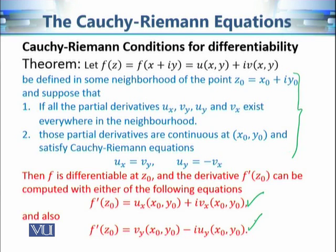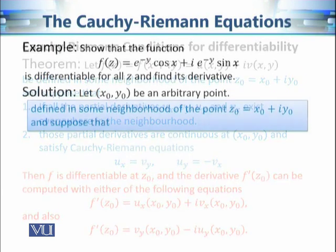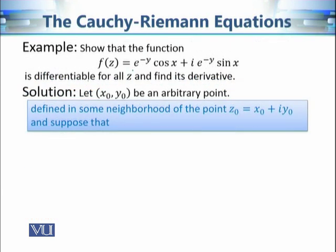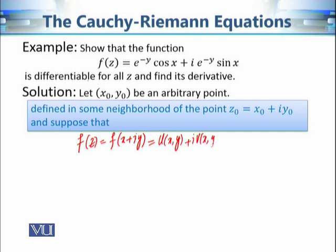Now let's consider the example where f(z) = e^(−y)·cos(x) + i·e^(−y)·sin(x). Writing f(z) = f(x + iy) = u(x, y) + i·v(x, y) and comparing, we get: u(x, y) = e^(−y)·cos(x) and v(x, y) = e^(−y)·sin(x).